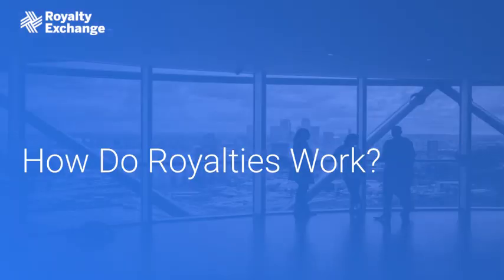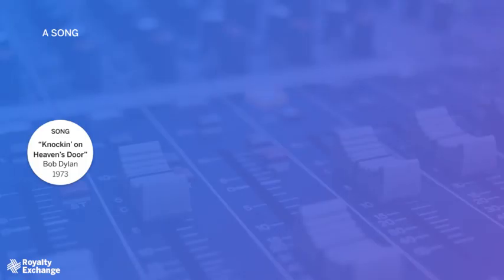The music business generates multiple types of royalties, and each royalty stream is dependent on the kind of copyright they are associated with. Every song has two copyrights: one for the song as it is written, and one for the song as it is recorded.